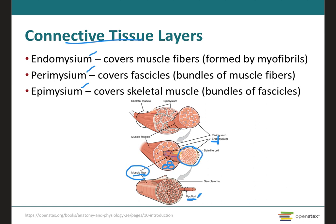Then a group of muscle fibers are going to come together and be wrapped up by the perimysium, which is the middle layer. This layer is made up of lots of collagen fibers, which will then form a bundle that's called a fascicle. So a fascicle is when you have several muscle fibers together, wrapped up by the perimysium. Then when you have lots of fascicles together, it will form the skeletal muscle, which will be wrapped up by the epimysium — epi meaning on top. This connective tissue is also made up of a very dense layer of collagen fibers, and you can see how the epimysium will be continuous with the tendon that then attaches to the bone.